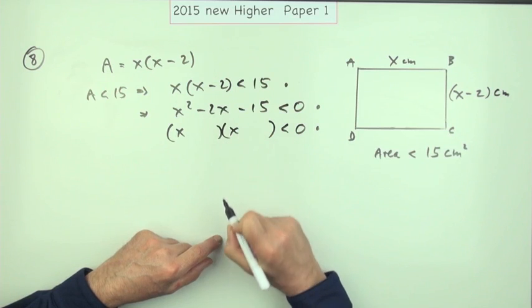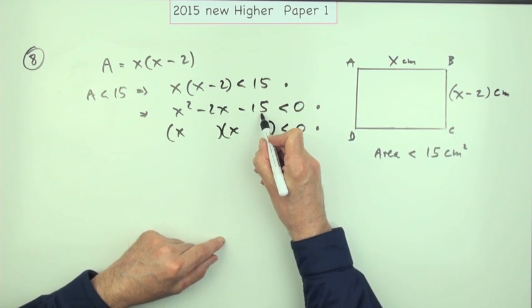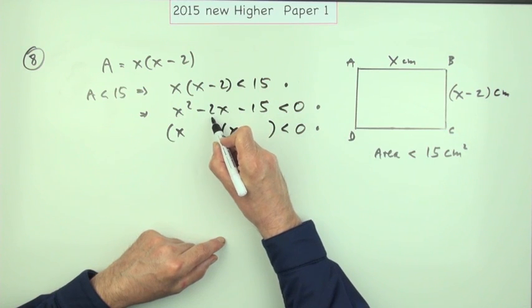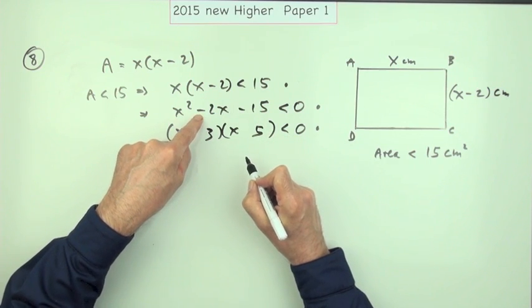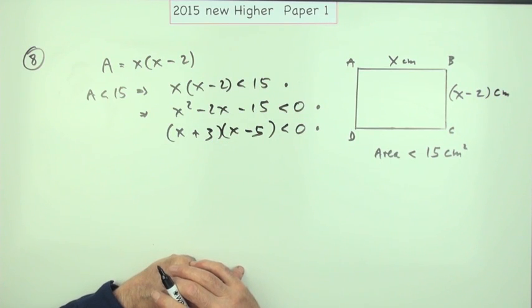So it'll be x times x. Multiply to give 15 with a difference of 2, that'll be 3 and 5. The negative for the middle term goes to the larger one, so that must be the opposite, which is 3.